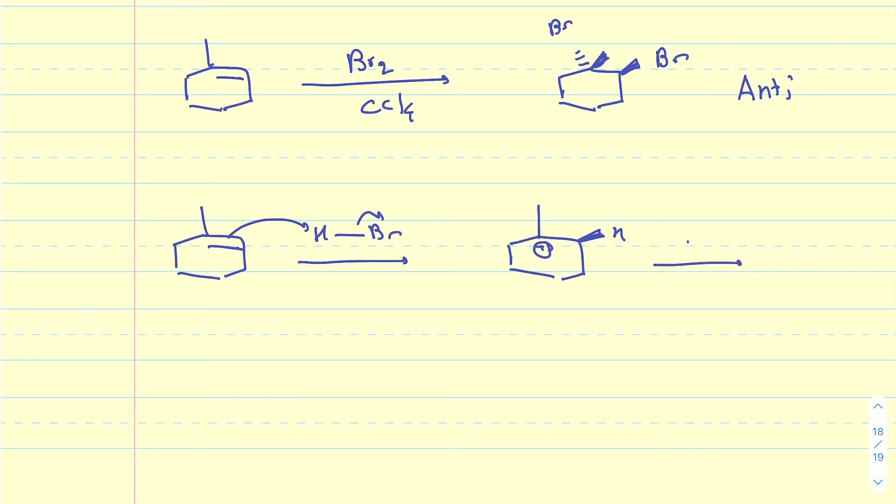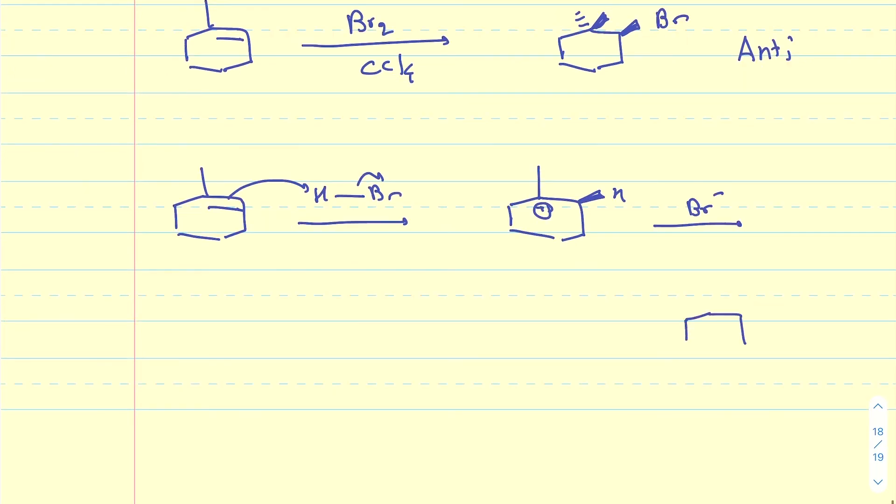And then when this is being intercepted by Br-, Br- can attack from either face of that carbocation. So basically, the hydrogen and the Br may end up on the same side or on opposite sides.